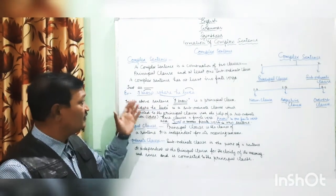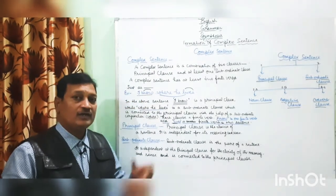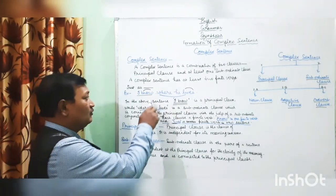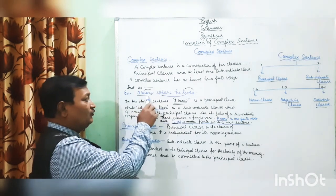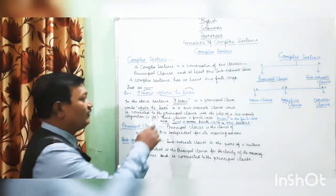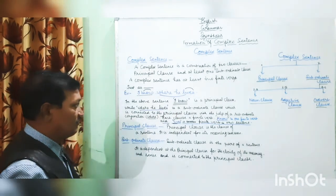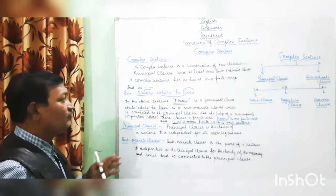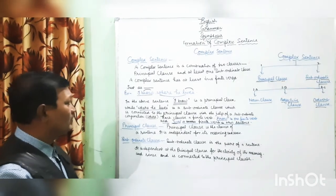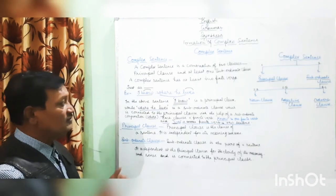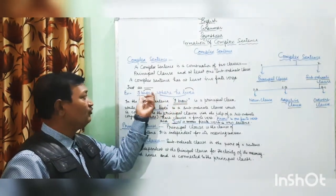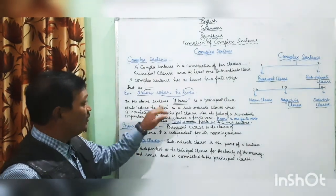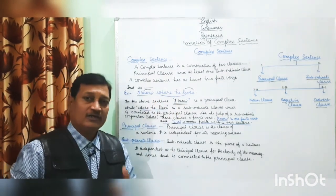For example: 'I know where he lives.' This is a complex sentence. I have underlined — 'I know' with black sketch and 'where he lives' with blue sketch — simply to show the difference between these two parts. In this sentence, 'I know' is the principal clause, while 'where he lives' is the subordinate clause.